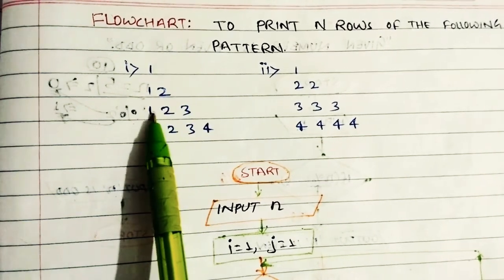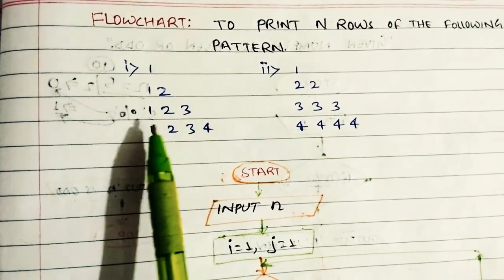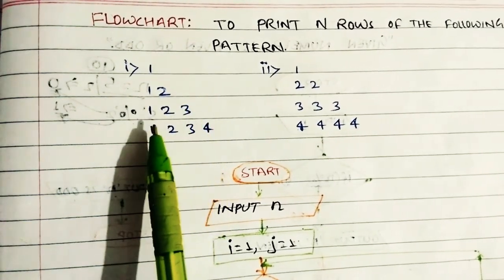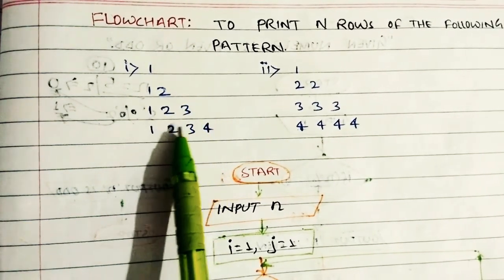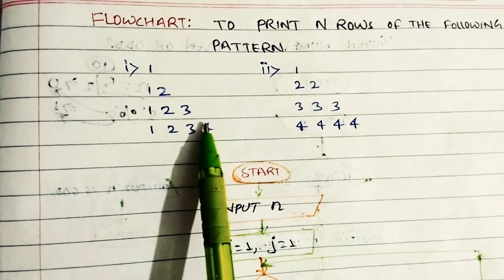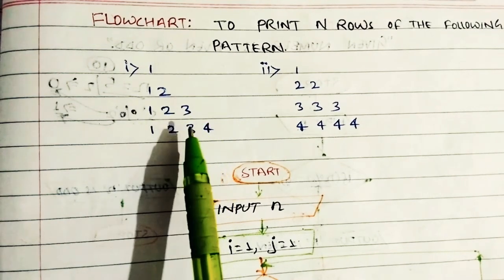In the third row there are 3 items: 1, 2, 3. And in the fourth row there are 4 items: 1, 2, 3, 4. So the logic is very clear.